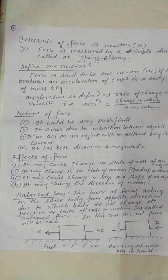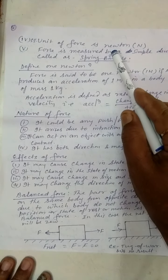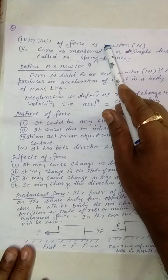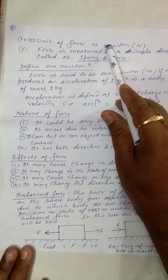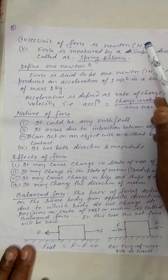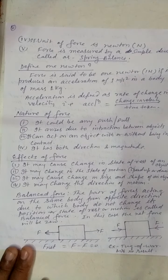The SI unit of force is Newton. If you write 'newton' in lowercase, then it is the unit. If you write it in capital, then it is the name of the scientist. But the symbol is capital N. An important point is that force is measured by a simple device called a spring balance.